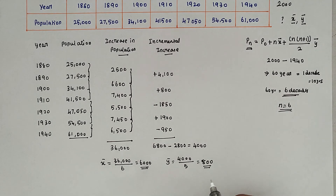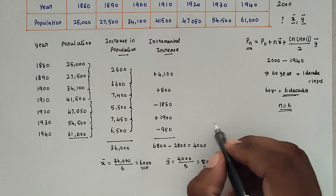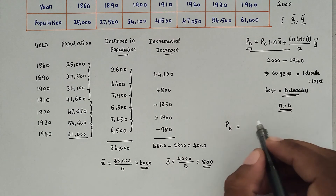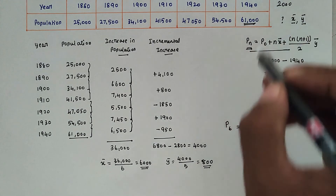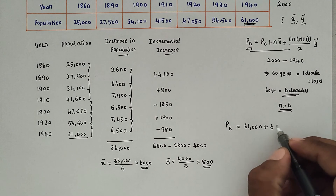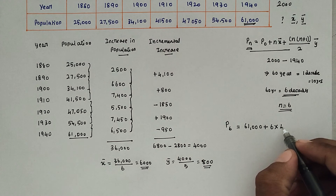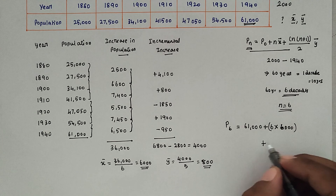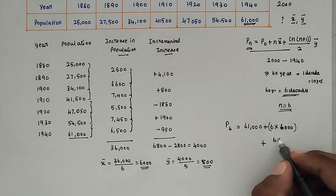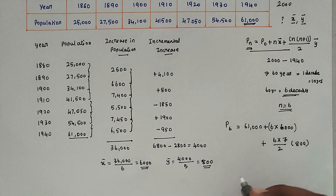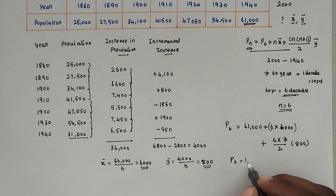Substituting all values into the formula: P₆ = P₀ + n·x̄ + [n(n+1)/2]·ȳ = 61,000 + 6×6,000 + [(6×7)/2]×800 = 61,000 + 36,000 + 16,800 = 1,13,800. So the estimated population for the year 2000 is 1,13,800.